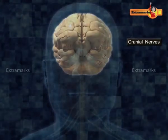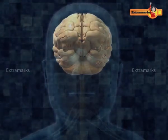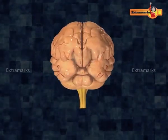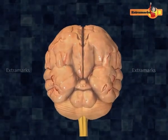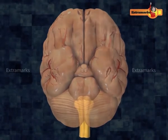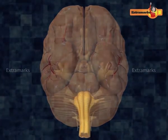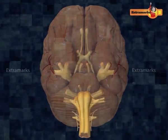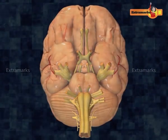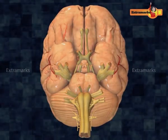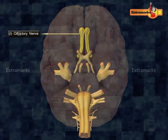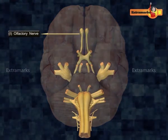emerge from or end into the brain. In humans, there are 12 pairs of cranial nerves which are numbered from 1 to 12 in the order in which they emerge from the brain. The 12 pairs of cranial nerves are: one, olfactory nerve.